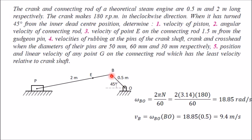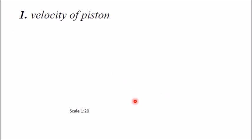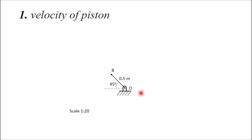The direction of this velocity is perpendicular to OB. To draw the configuration diagram, since dimensions are in meters, a scale of 1:20 is used to reduce lengths for the A4 sheet. First, mark point O, then draw the crank at 45 degrees with length 0.5/20 centimeters to get point B.